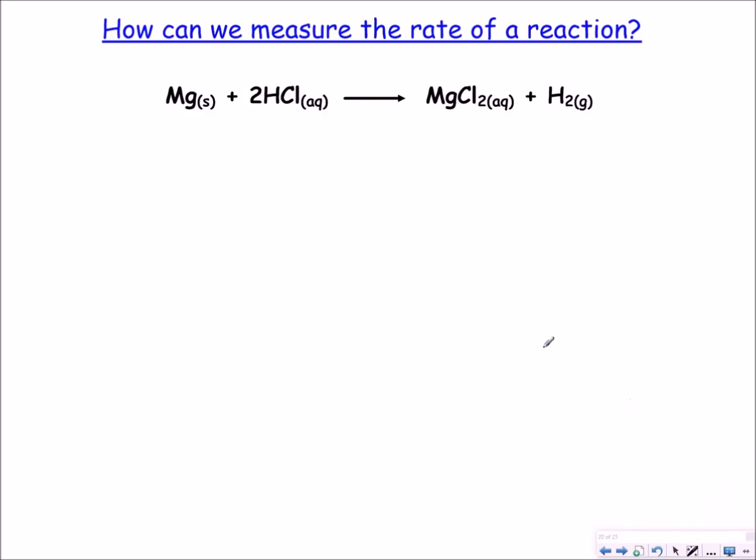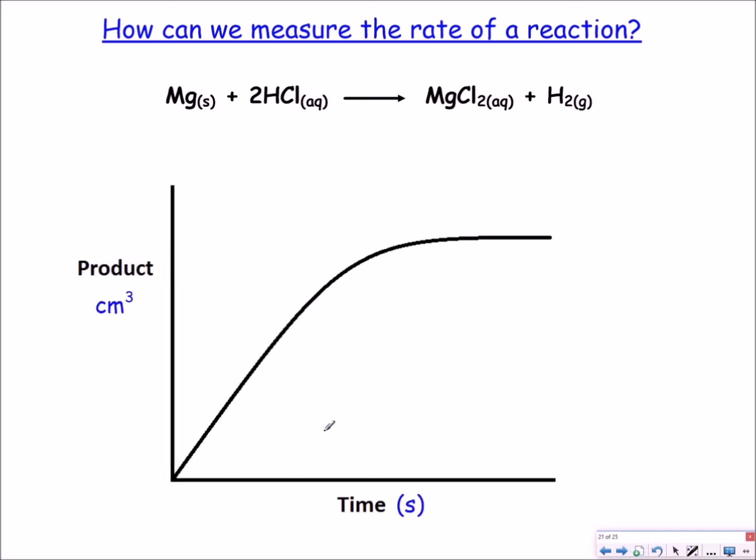So in an exam you could be asked to calculate the rate of a reaction from either a graph or a set of data. So here I've got an example reaction: magnesium reacting with hydrochloric acid to give us MgCl2 and hydrogen gas. I'm going to focus on hydrogen gas here as the product of interest. So if I was to plot a graph it looks something like this. As time goes on the amount of hydrogen gas produced increases and eventually the reaction slows down about here and it completely stops at this point. This is because all the reactants have been used up.